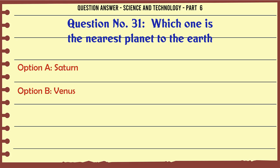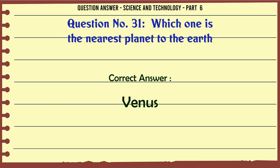Which one is the nearest planet to the Earth? A. Saturn. B. Venus. C. Mars. D. Jupiter. The correct answer is Venus.